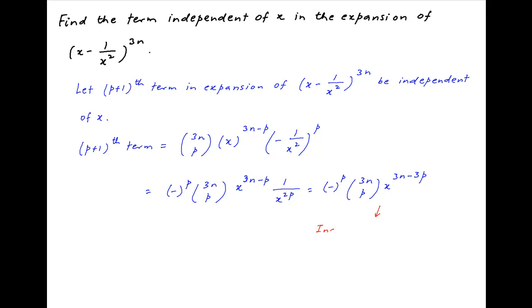Now, if this term is to be independent of x, then the power of x must be equal to 0. Therefore, 3n minus 3p should equal 0, and therefore p is equal to n.